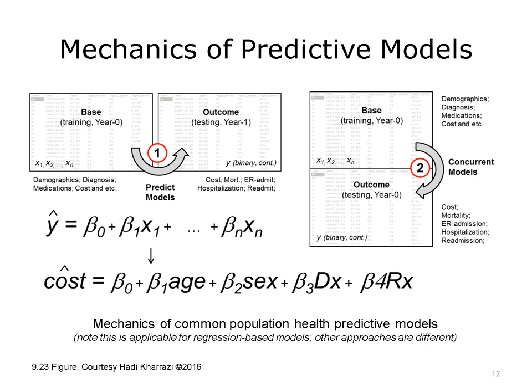This diagram shows the two common methods of extracting information for population health models. In predictive models, as shown in Circle 1, the base data set — usually one year of claims data — is used to provide all of the independent variables for the model, while the outcome data set, which is next year's claims, provides the outcome such as cost. In concurrent models, indicated by Circle 2, the base year provides both the base and the outcome data sets. Usually, concurrent models have higher accuracy, as using the same year's outcome is less variable than using next year's outcome. If using the linear regression methodology, the equation can be translated as predicted cost being a linear function of age, sex, diagnosis, and medications.